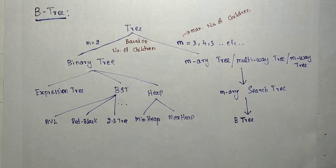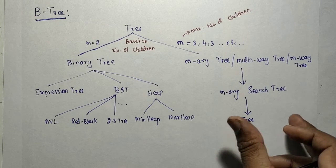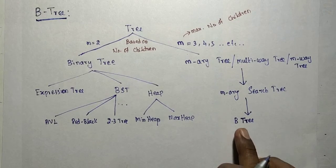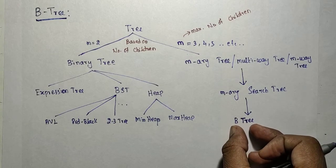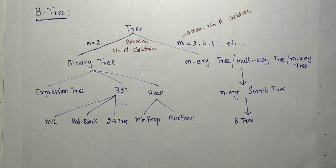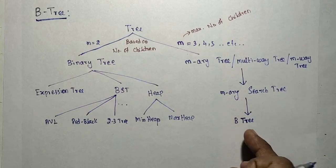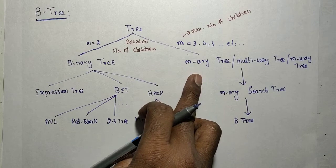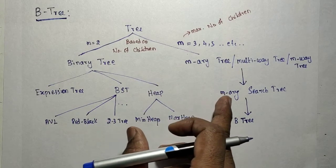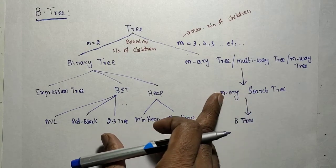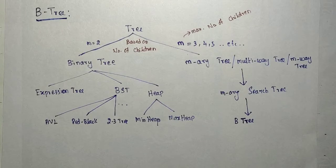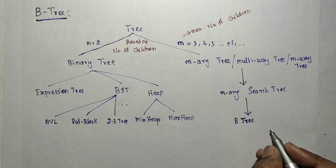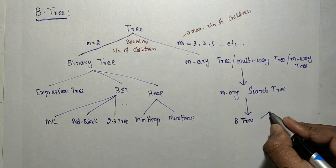The B-tree is a height-balanced m-way search tree where all leaf nodes are at the same level. It is a kind of m-way search tree with additional properties. There are further classifications: the B-star tree and B+ tree. The definition and properties of the B-tree are what we are going to discuss now.